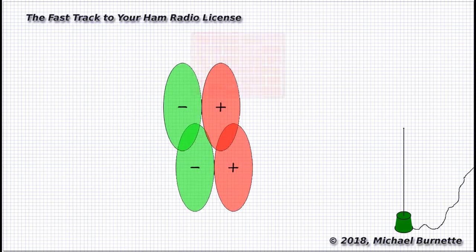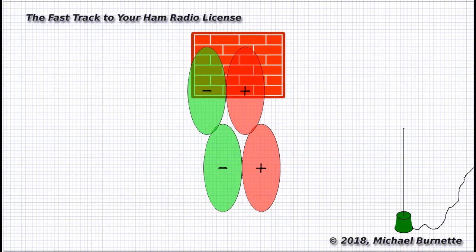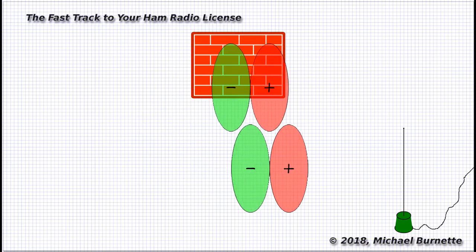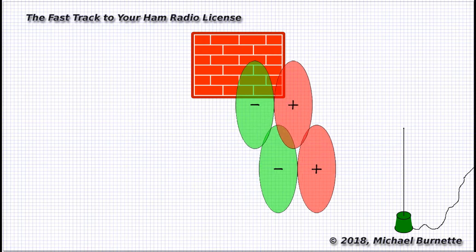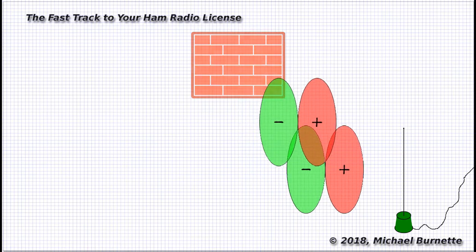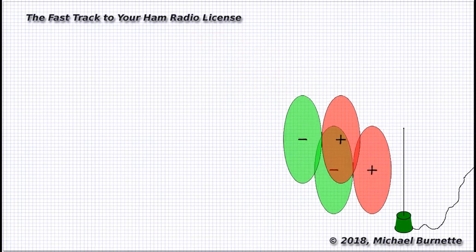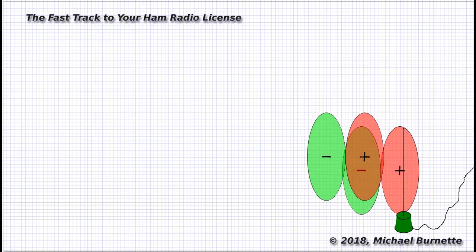One part of the wave travels straight from the transmitting antenna to the receiving antenna. The other part leaves the transmitting antenna at a slightly different angle, bounces off a brick wall that magically appears, and then continues on to the receiving antenna.